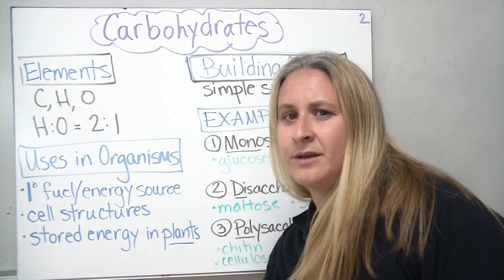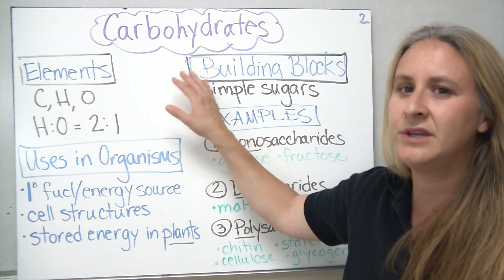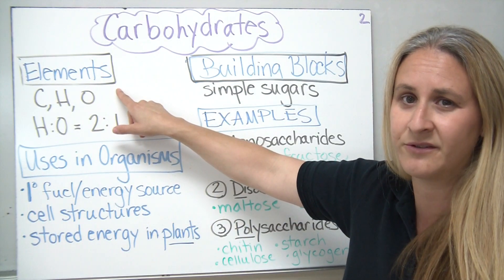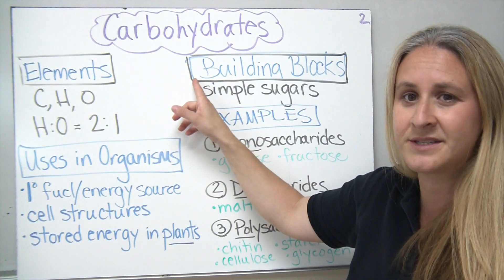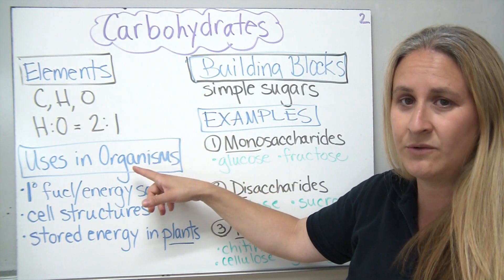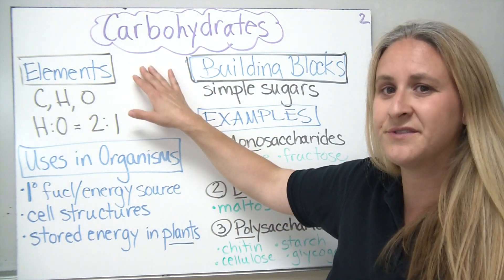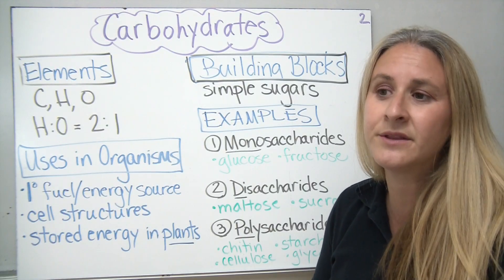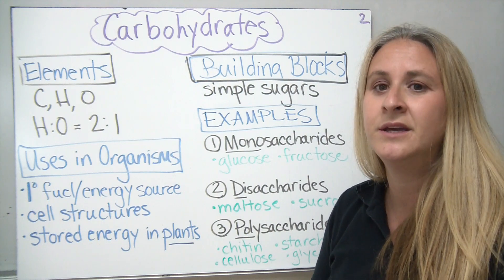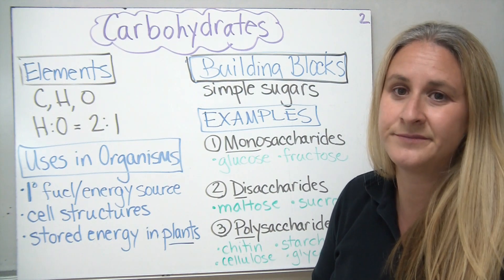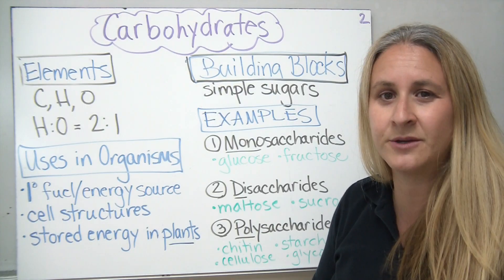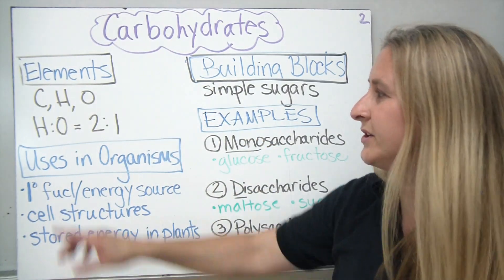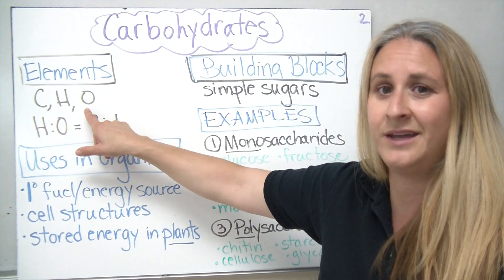The first organic compound that we're going to be talking about are the carbohydrates. For each of the organic compounds, we're going to discuss four main things: the elements or types of atoms found in that organic compound, the building blocks, the uses in living organisms, and then some examples. In terms of carbohydrates, the elements that are typically found include carbon, hydrogen, and oxygen — those are the only three that you'll see.